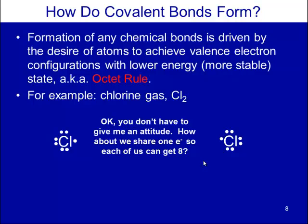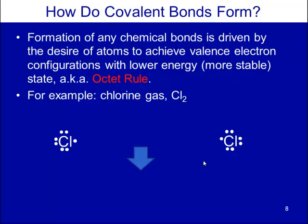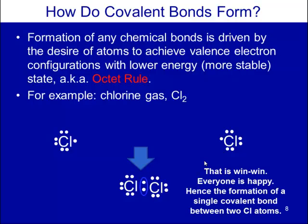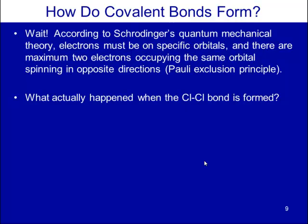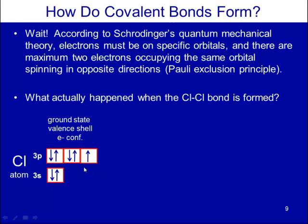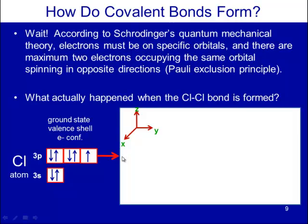The two chlorine atoms share a pair of valence electrons — everyone's happy. This is the driving force for bonding. But according to Schrödinger's model, electrons must be on specific orbitals with a maximum of two, spinning in opposite directions per the Pauli exclusion principle. The valence electron configuration for chlorine in the ground state is 3s² 3p⁵. Focusing specifically on the 3p orbitals, the 3s is fully paired and not available.